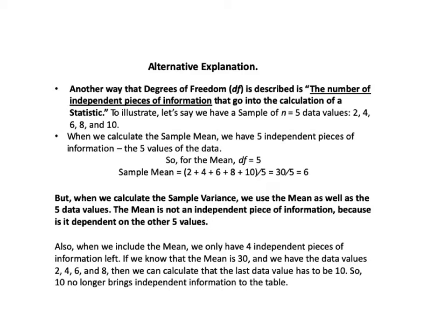To illustrate, let's say we have a sample of n equals 5 data values. And these values are the numbers 2, 4, 6, 8, and 10. When we calculate the sample mean, we have five independent pieces of information, which are the five values of the data. They are independent because none of the values are dependent on the values of another. So for the mean, df equals 5, and we have the sample mean equals 2 plus 4 plus 6 plus 8 plus 10 divided by 5 equals 30 divided by 5 equals 6.